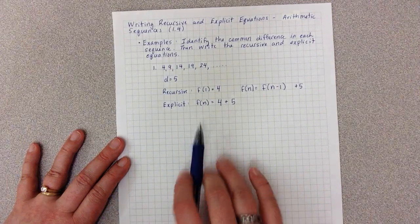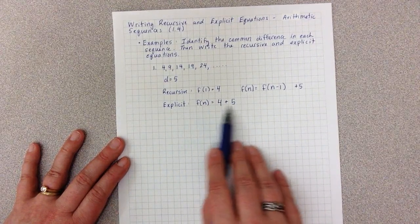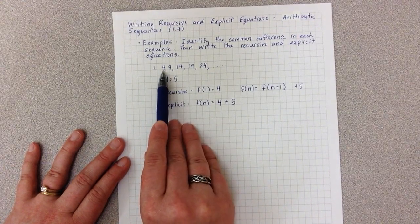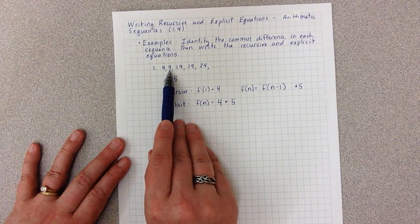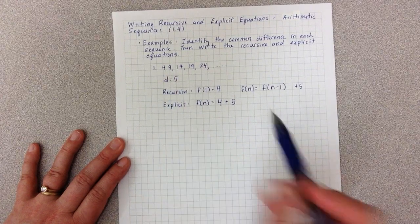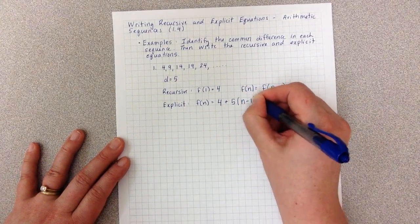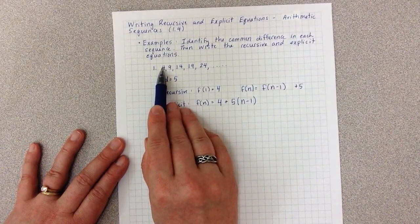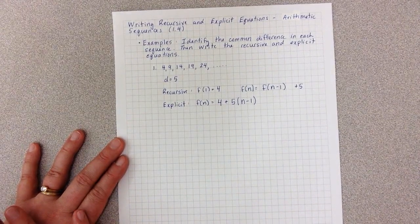Now there are two ways to write the explicit. This first way, I have to go back and say to myself, in order to get this first term, did I add five? And the answer is I didn't add five. So in order to talk about the second term, I actually had to go back one term in order to go plus five. That's one way to deal with this.